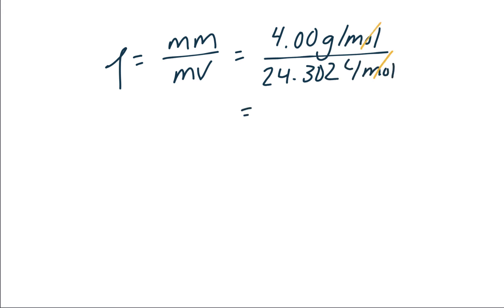And the molar volume at 23 degrees Celsius and 1 atmosphere is 24.302 liters per mole. Our moles cancel, and we see that the density of helium at 23 degrees Celsius and 1 atmosphere is 0.165 grams per liter.